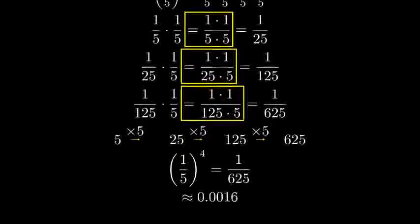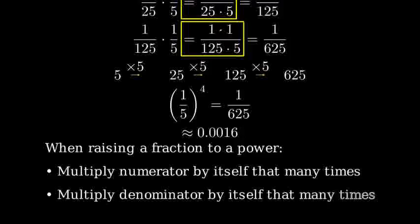To summarize, when raising a fraction to a power, we multiply both the numerator and denominator by themselves that number of times. In this case, we multiplied one by itself four times in the numerator, which is still one, and five by itself four times in the denominator, which gives us six-hundred-twenty-five.